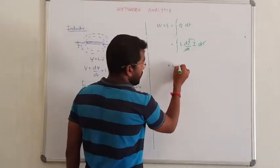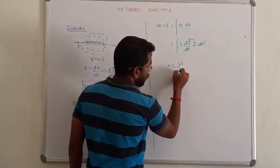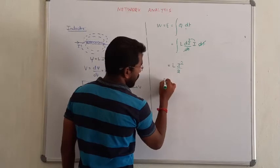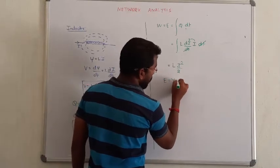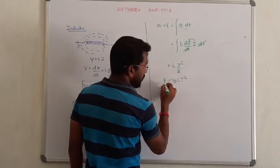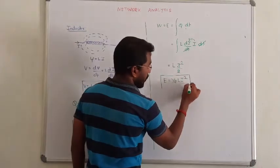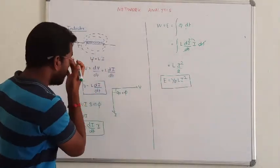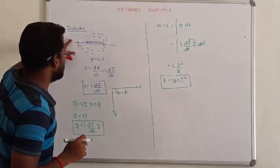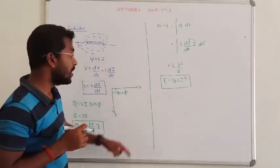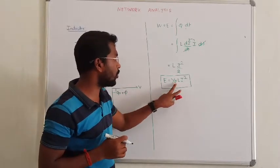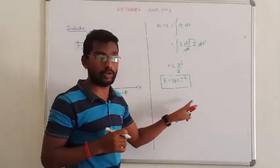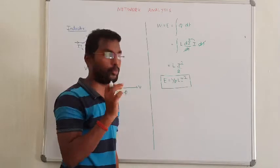So what is the conclusion? Energy stored in the inductor becomes half L i squared. Most important formula: inductor stores energy as half L i squared. Don't forget this. If I want to drop, it's half L i squared. Don't forget this term, that is very very important.